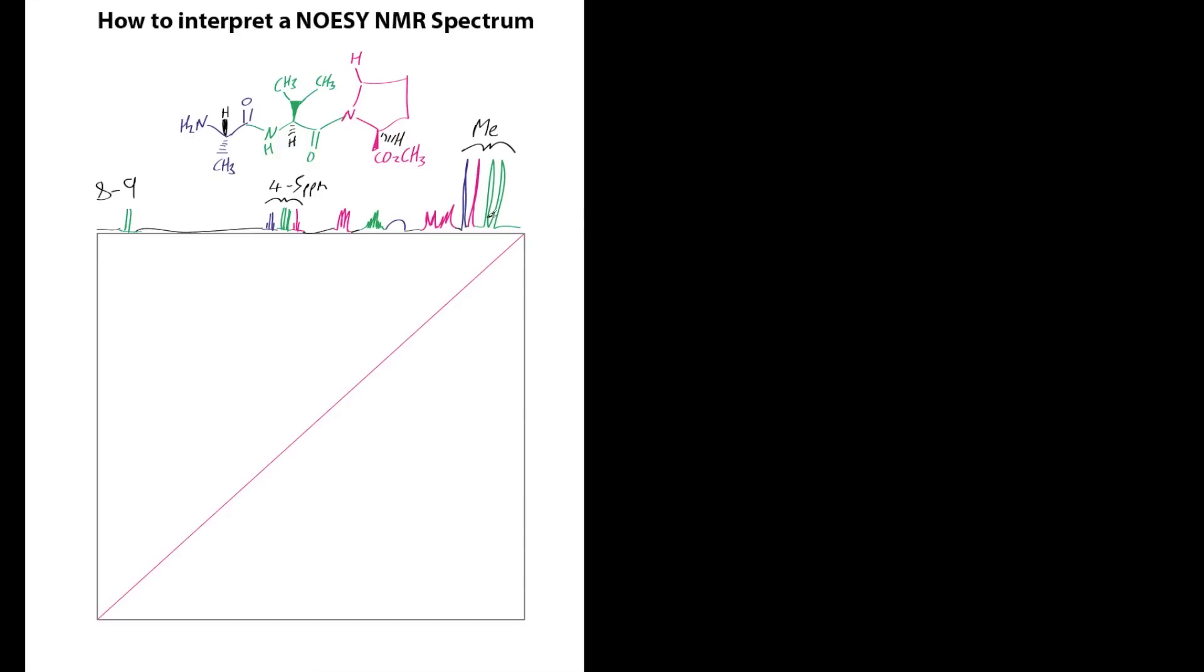They're not really easy to interpret because we've got CH3 there, CH3 there, CH3 there, and CH3 there. So they're not a good starting point. That would be a good starting point, there's only one of them, and that's that.